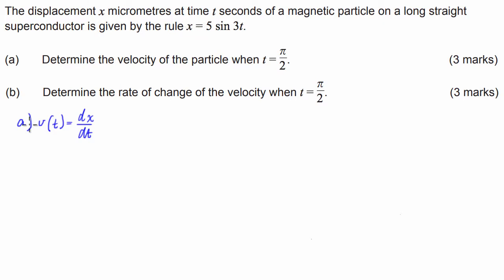So in this case if we take the derivative of this, we already have x of t and x of t is equal to 5 sine of 3t.